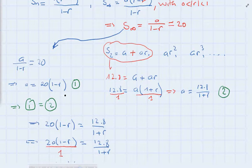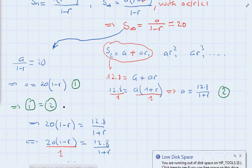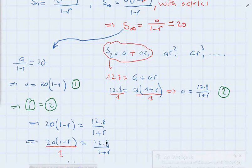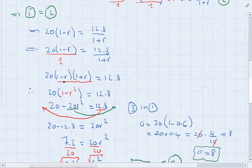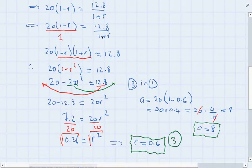Now we have two equations: a equals 20(1 minus r) and a equals 12.8/(1 plus r). Setting them equal — equation 1 equals equation 2 — gives us 20 times (1 minus r) equals 12.8 divided by (1 plus r). Cross-multiplying gives 20 times (1 minus r) times (1 plus r) equals 12.8. This is an algebraic identity: (1 minus r)(1 plus r) equals (1 minus r squared).